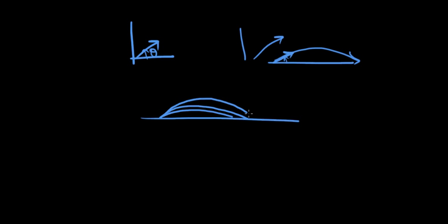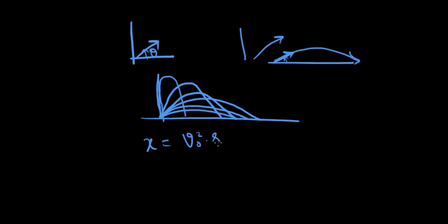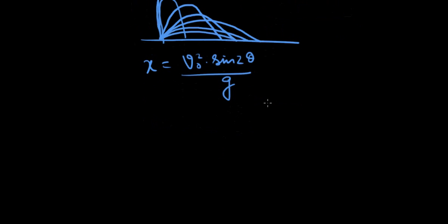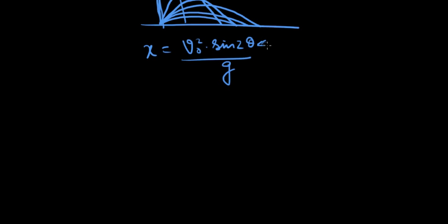45 degrees goes this way. 60 goes higher and drops here. Then 80 here. Then 90 drops back the same way. What we have to understand is we need to find the angle where the range covered is maximum. If you followed the previous lecture, we derived the distance as x equals v₀ squared times sine 2θ over g as the expression for the distance. There are two ways of determining how much theta should be for maximum distance.